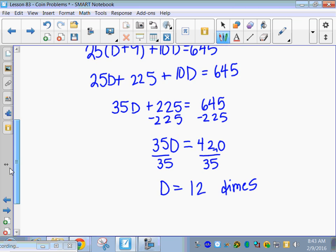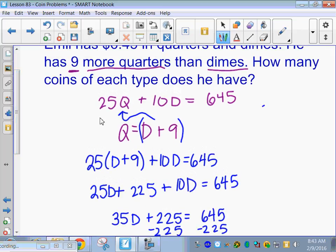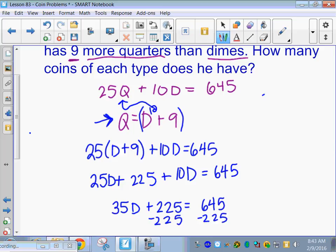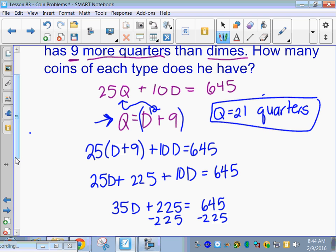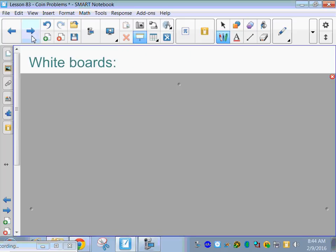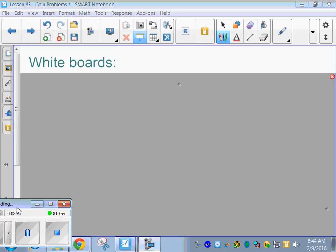And then we want to go back up. Probably to right here would be the easiest place to substitute in. So, quarters is equal to dimes plus 9. And we just solved and got 12 dimes here. So, how many quarters do we have? Good. So, 21 quarters and 12 dimes. Alright. Let's try it.